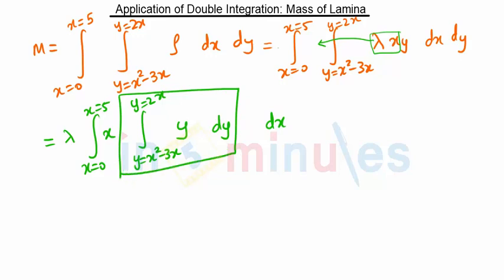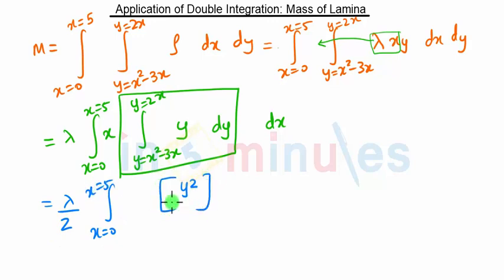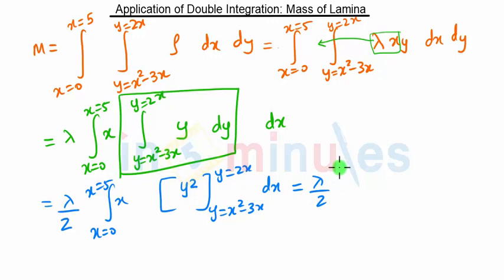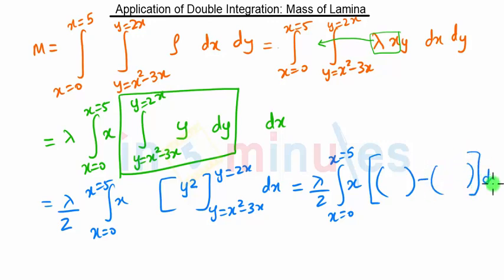Focusing on the inner integration: the integral of y is y²/2. So we have lambda/2 times the integral from x = 0 to 5, applying the limits y = x² - 3x and y = 2x to get (2x)² - (x² - 3x)² dx. When we put y = 2x we get 4x². When we put y = x² - 3x, we get (x² - 3x)² which expands as a² - 2ab + b² form.